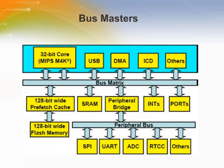They can transfer data within the microcontroller or outside of the microcontroller without any assistance from the CPU. The bus masters may read and write other bus masters too. For example, the DMA module may read or write USB registers. However, the bus master cannot access core registers in the CPU — only the CPU can access the core CPU registers.